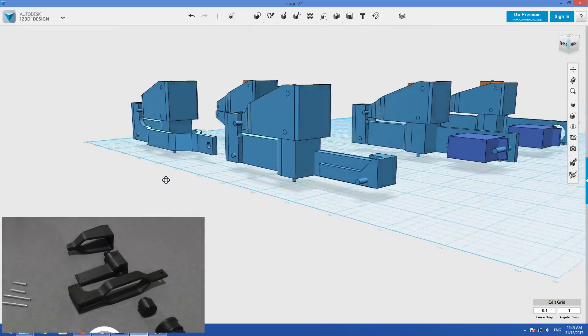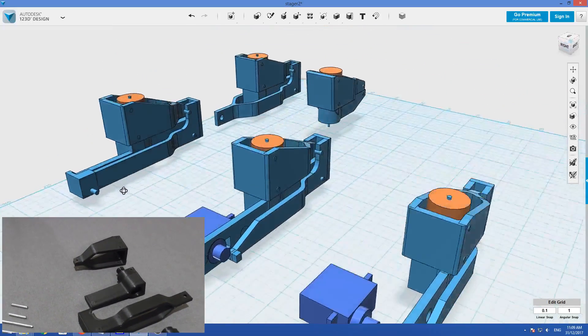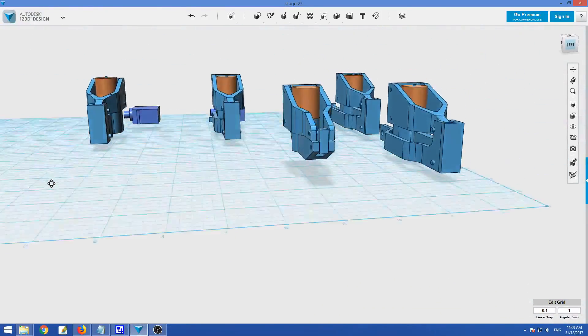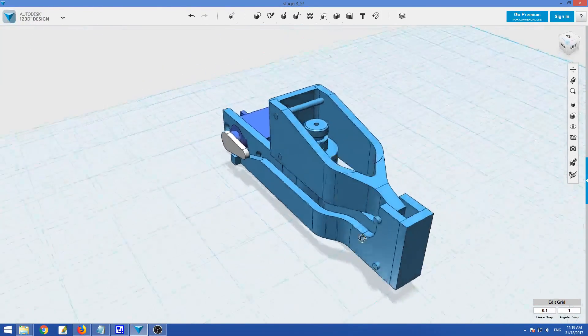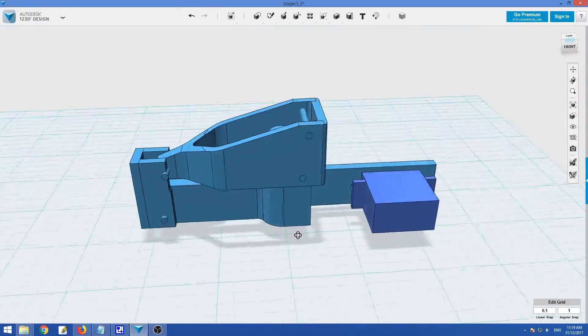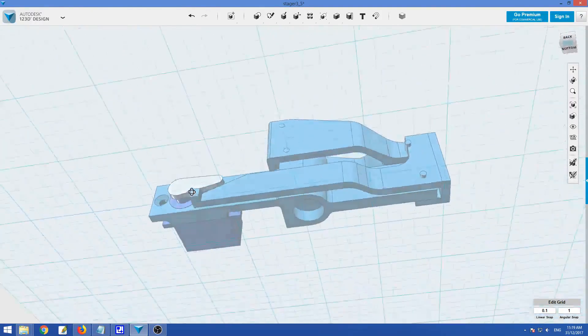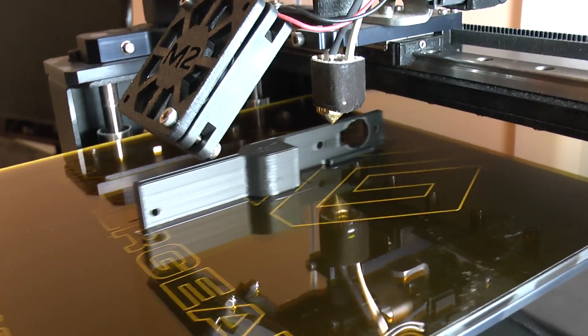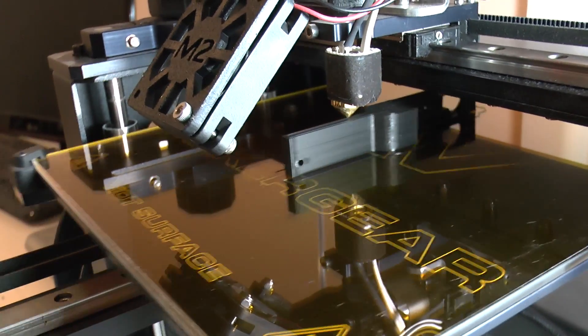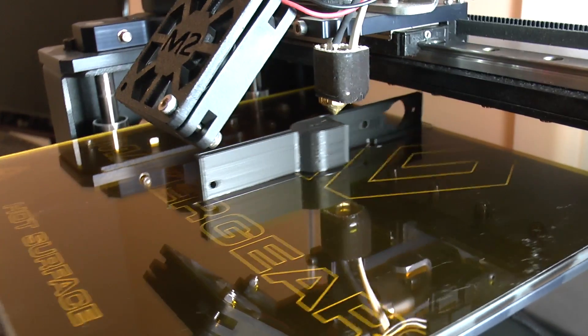We went through a number of different iterations designing how the two levers are mounted and connected together. This is the design we decided to go with for a prototype of the concept, and it also mounts a small servo motor. We decided to 3D print this design to see how well the concept would work with our regular low-pressure water rockets.